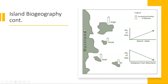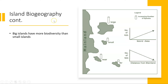Some key findings from studying islands: first, big islands have more biodiversity than small islands. Keep in mind the only way for organisms to populate an island is through water or by air, so bigger islands present a larger target. A larger target means a higher likelihood that a seed, a bird, or another species will by chance land on that island.